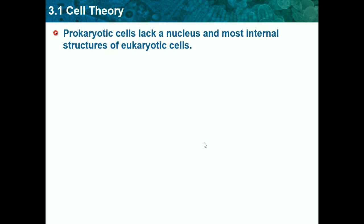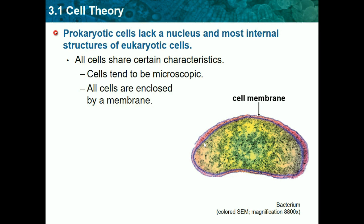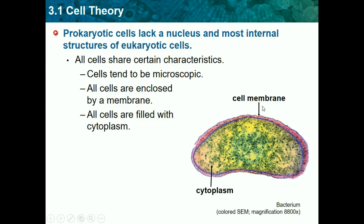There are two main types of cells — prokaryotic and eukaryotic — but they all share certain characteristics. Cells tend to be microscopic, which is why we needed microscopes to discover them, and improvements in the microscope helped develop our theory. If asked about an important discovery in cell theory development, the answer is microscopes. All cells are enclosed by a membrane called the cell membrane, and all cells are filled with cytoplasm — we'll go into more detail on those in the next lesson.